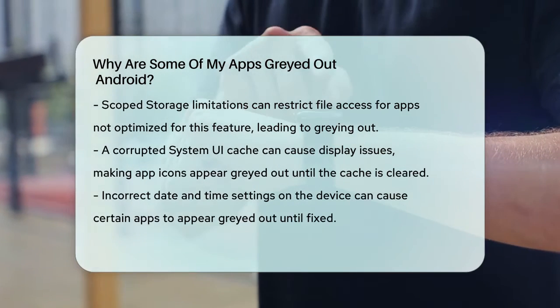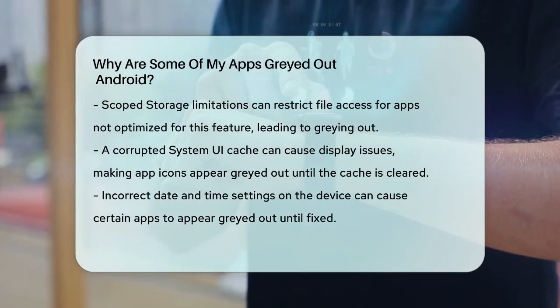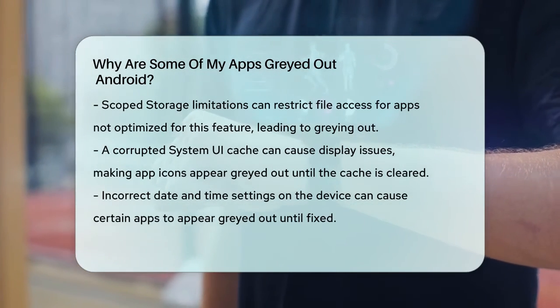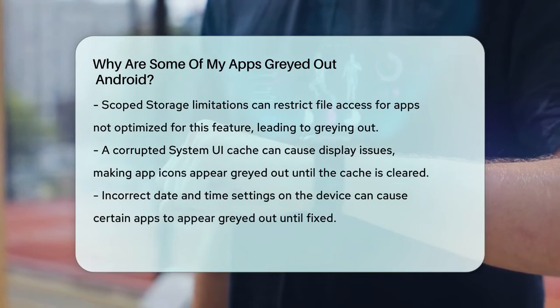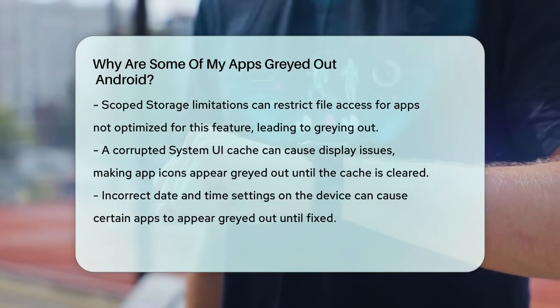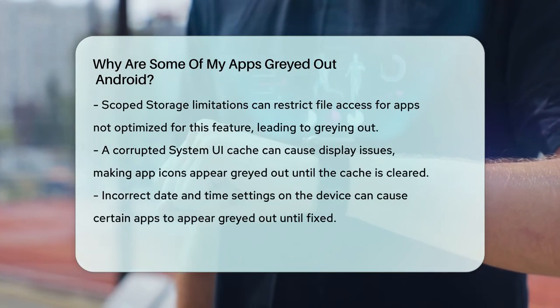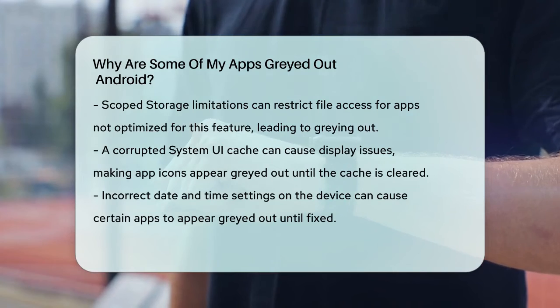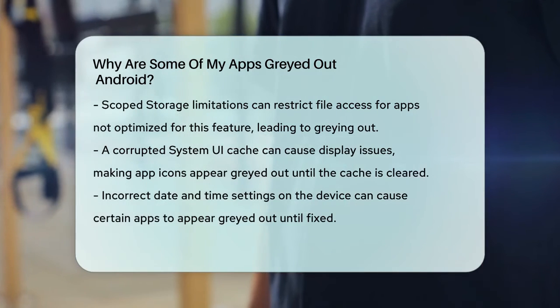A corrupted system UI cache can cause display issues, making app icons appear grayed out. Clearing the cache or restarting your device usually fixes this problem.